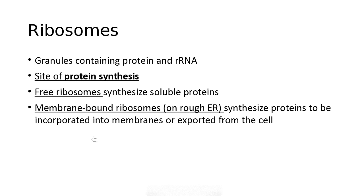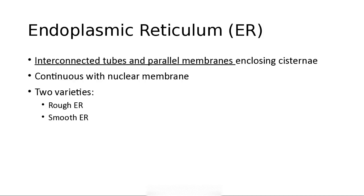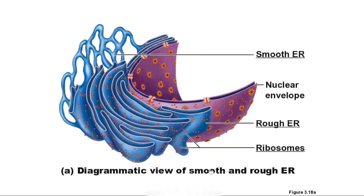Membrane-bound ribosomes synthesize proteins that may be incorporated into membranes or exported from the cell. The endomembrane system is basically a whole system that stores, produces, and exports biological materials, and degrades harmful things. The endoplasmic reticulum is wavy membranes. If you were trying to create a model of a cell, you could use very thin stringy taffy to make your smooth endoplasmic reticulum, and for the rough ER you'd add little sprinkles to represent the ribosomes that make proteins.